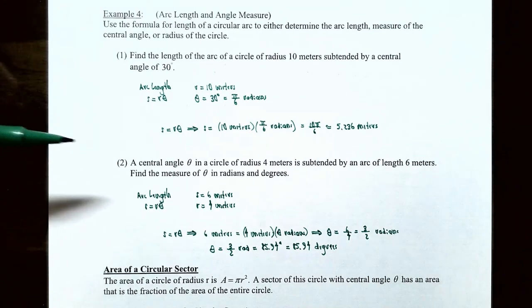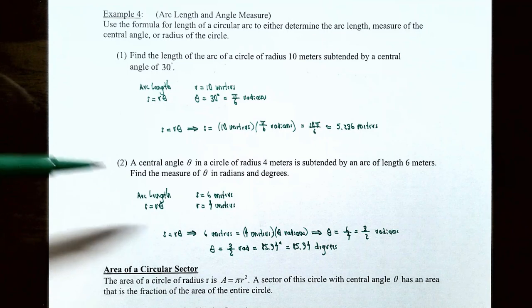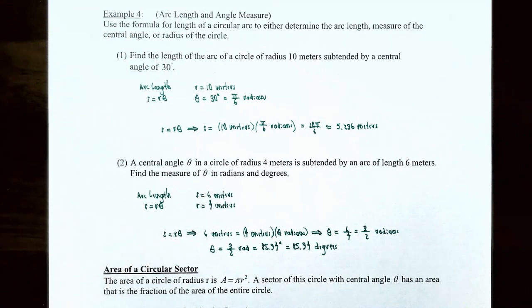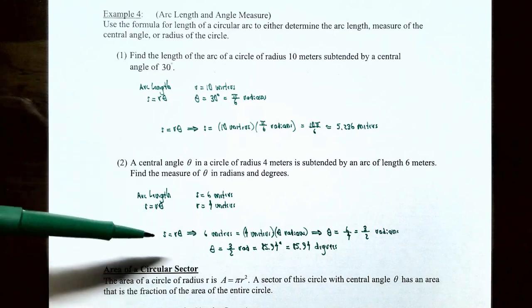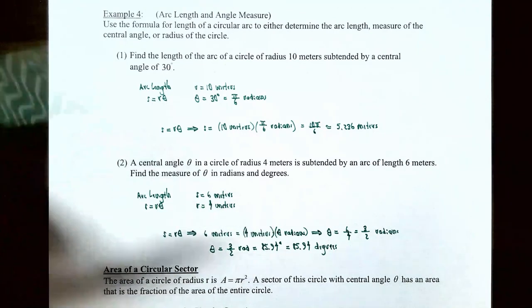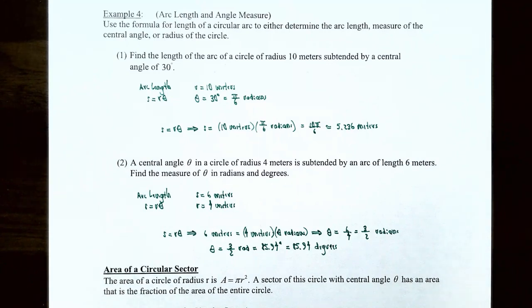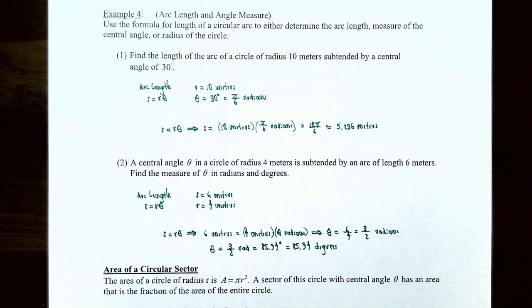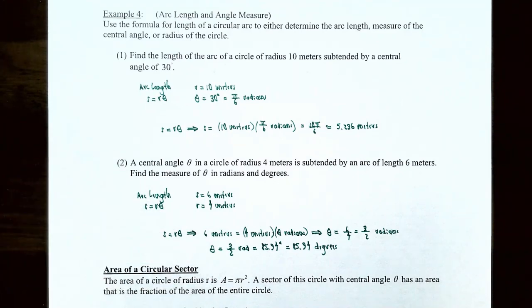Number two: a central angle theta in a circle with radius 4 meters is subtended by an arc of length 6 meters. Find theta in radians and degrees. Using s equals r times theta: 6 equals 4 times theta, so theta equals 6 over 4 equals 3 over 2 or 1.5 radians. Converting to degrees: 3 over 2 times 180 over pi gives approximately 85.94 degrees.